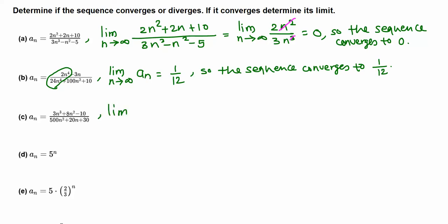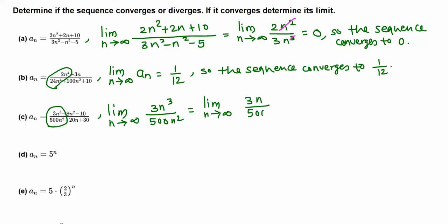Similarly, we find the limit by looking at the leading terms: 3n³ over 500n². Canceling n² leaves 3n over 500. When n goes to infinity, 3 times infinity divided by a finite number is still very big — the limit is infinity, so the sequence diverges.